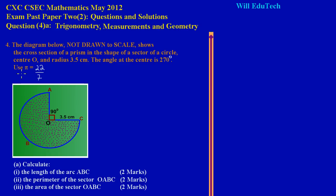They have given us a very important piece of information: pi is equal to 22 over 7. Now let's look at it. They gave us the angle at the center, and let's just identify that angle — they are speaking about this angle here, and I'm just marking it now in black. They said that it was 270 degrees. And that simply makes sense, because angles at the center must sum to 360. So if out here is 90 degrees, then adding 90 to 270 gives us a total of 360 degrees.